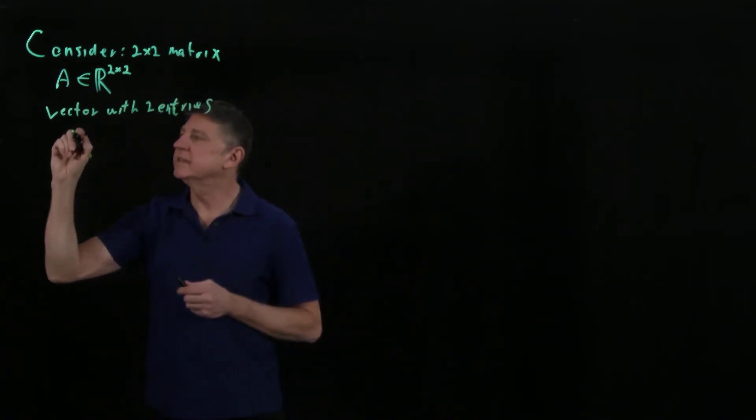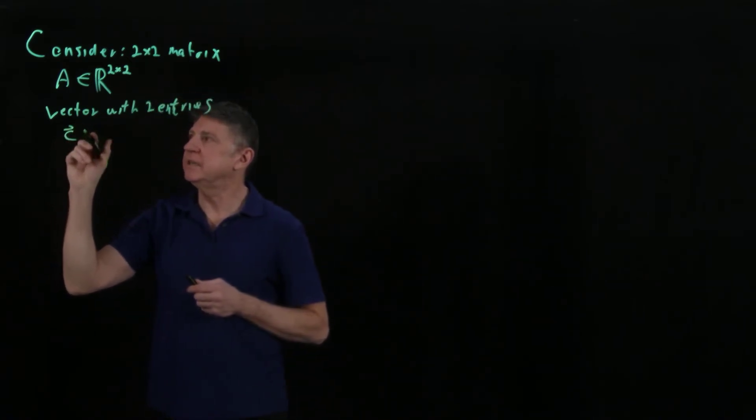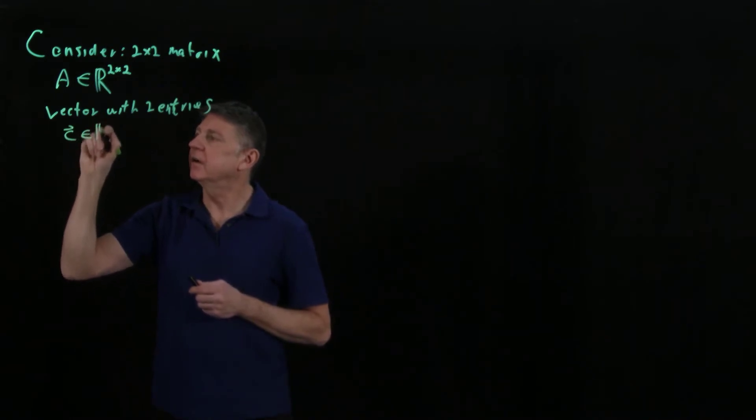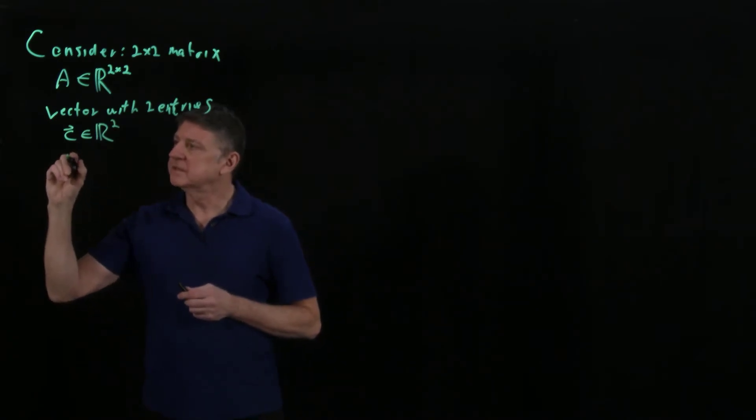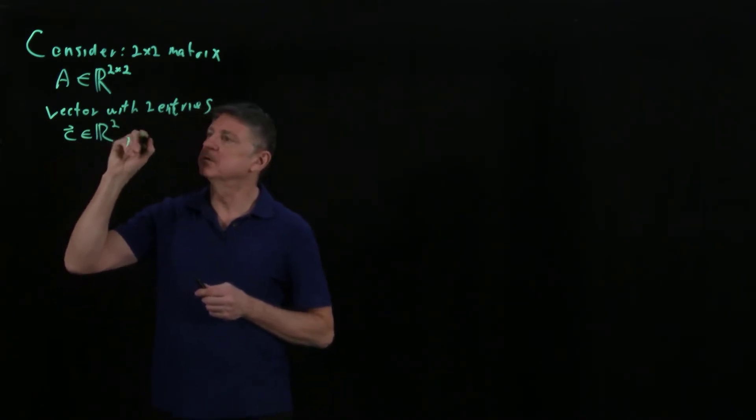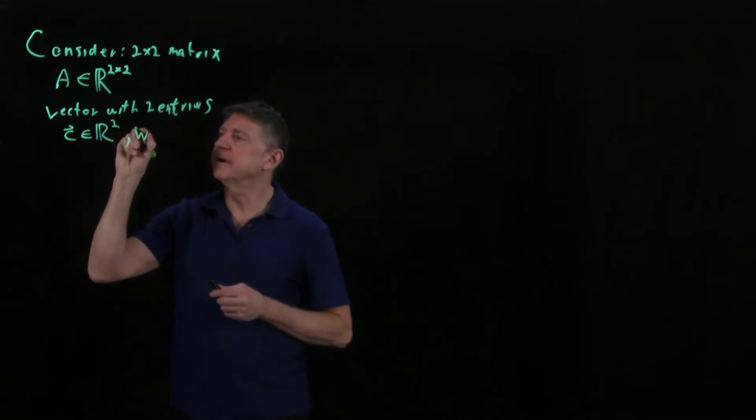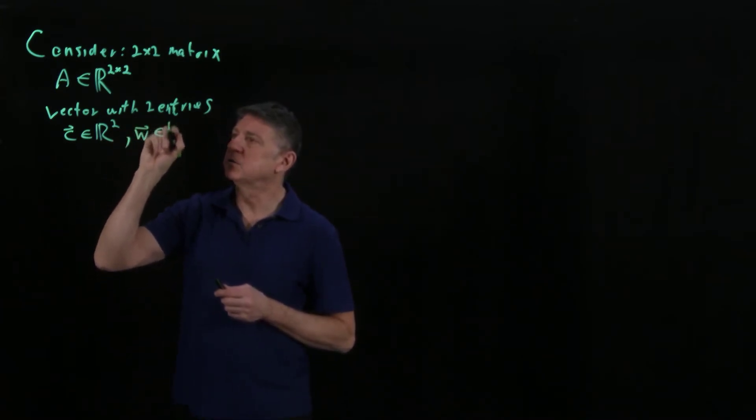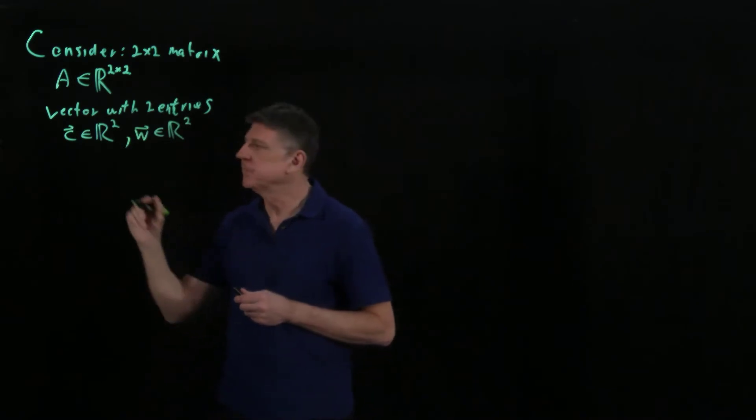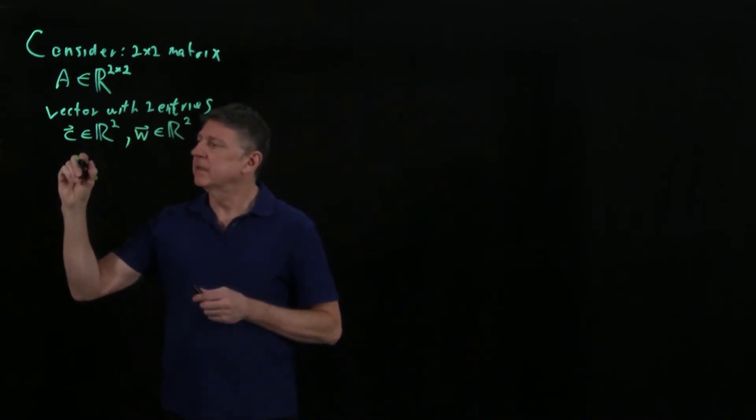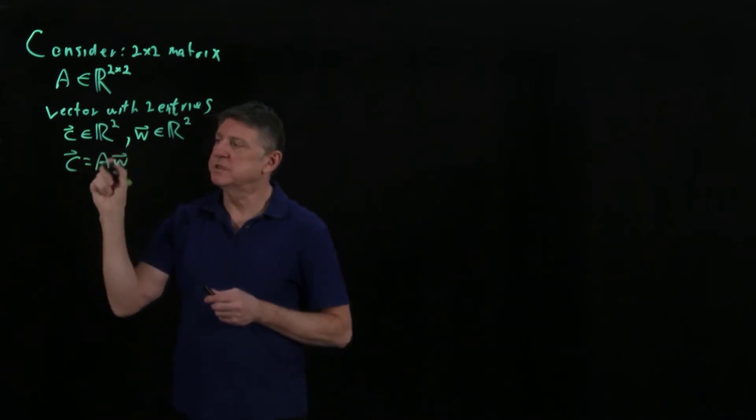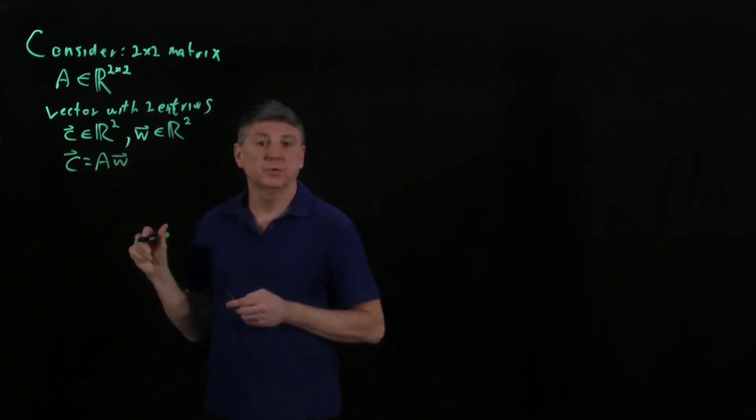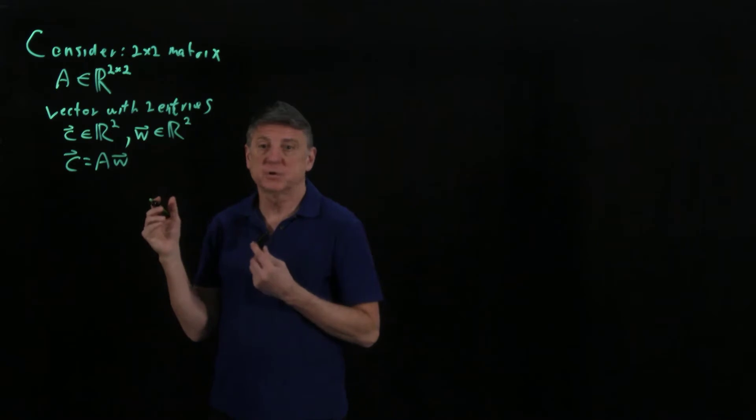And let's consider a vector that has two entries. And we'll say that this is a vector, for example, C, and it also has all real numbers, and it has two entries. We could write, and let's also suppose that we have another vector, W, that is also all real numbers, and there are two entries. We could write C equals A times W. This is a formula that we'll go through quite often in the first module of the course.